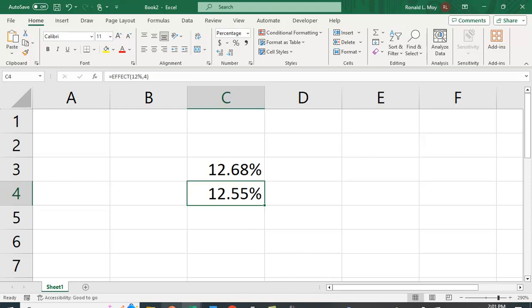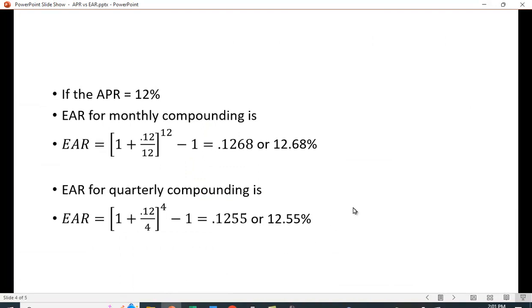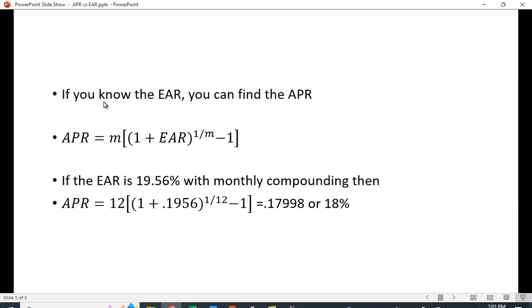If you know the EAR, you can also calculate the APR. This isn't quite as common because the APR is the one stated by law, but if you know the effective rate, you can solve for the APR using this formula: 1 plus the EAR raised to the 1 over m power, minus 1, times m. So if we have 19.56% with monthly compounding, this works out to 0.17998, which rounds off to 18%.